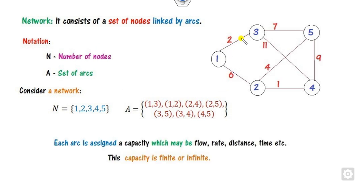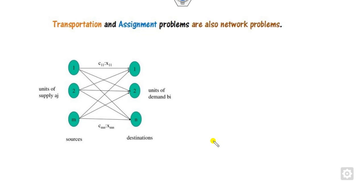These arcs may have weights written as distance, time, flow, and so on. The values can be finite — like 2, 6, 11, 4 — or infinite. As we discussed, transportation and assignment problems are also part of the network problem.